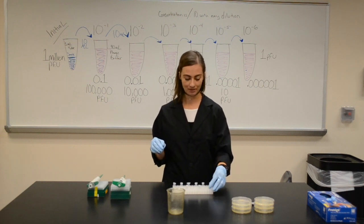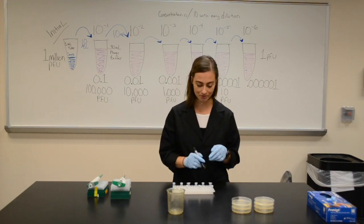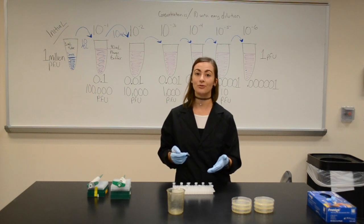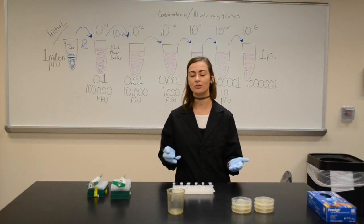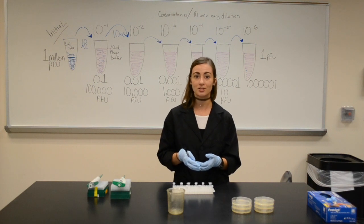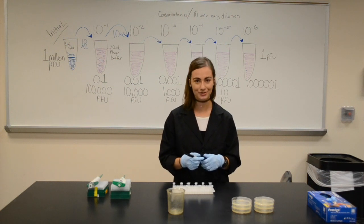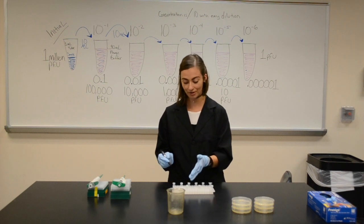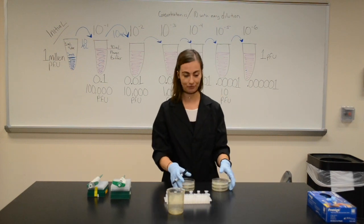We have our phage buffer which will already be aliquoted out for you. We have our bacteria, and I have my six tubes out. What's important with the tubes is to label them. Once you start going, if you didn't label, you're not going to know what you have and you're going to have to start over from the beginning. I've forgotten to label before and let me tell you, I won't do that again. I'm going to label my tubes 10 to the minus 1, 10 to the minus 2, minus 3, minus 4, minus 5, minus 6.